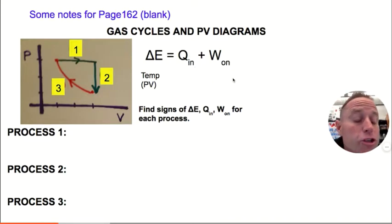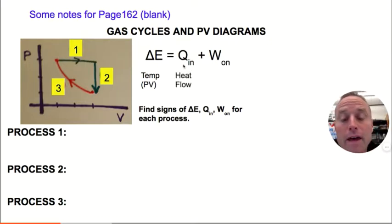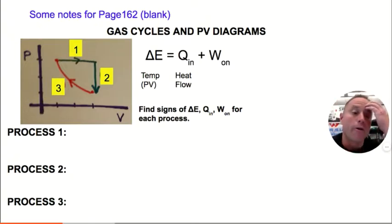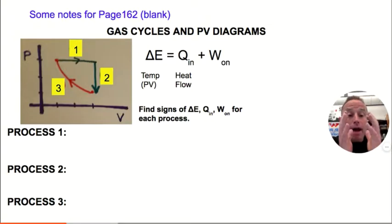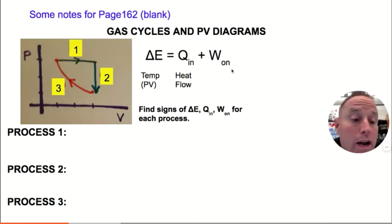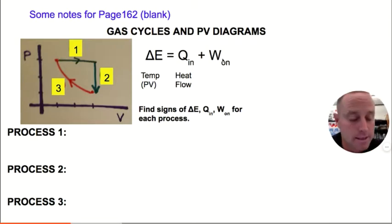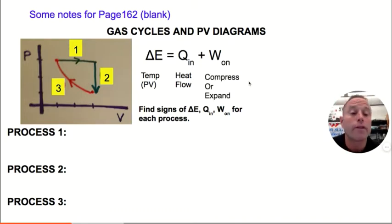For heat flow, you just need to know whether heat went in or out. If heat flowed in, Q in is positive; if heat flowed out, Q in is negative. For work, work is done on a gas if you squeeze it — if the volume went down — and work is done by a gas if it got bigger. So you just look at whether the gas compressed or expanded.